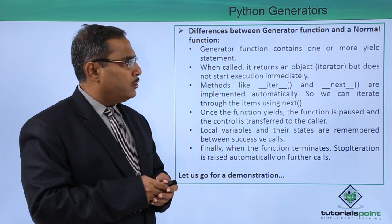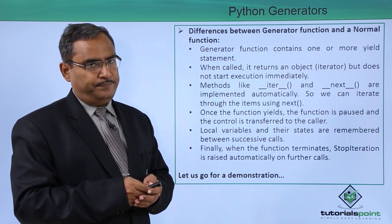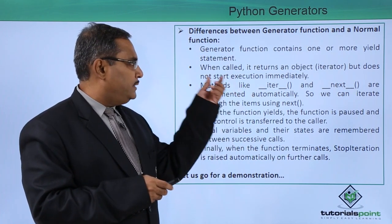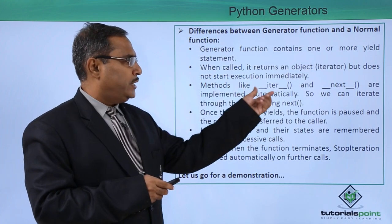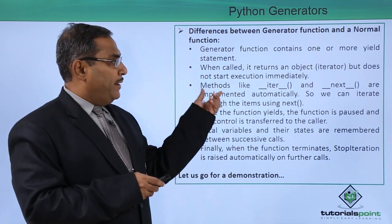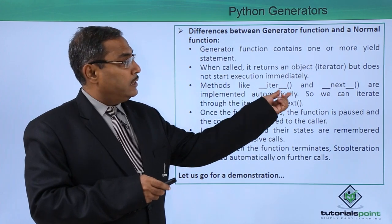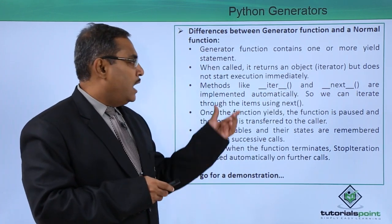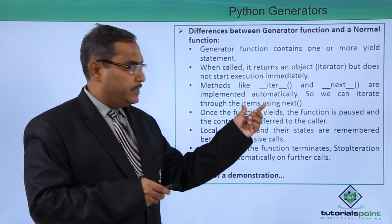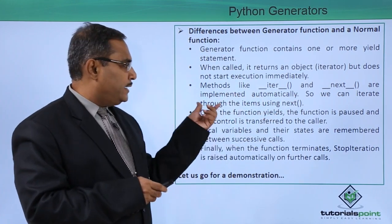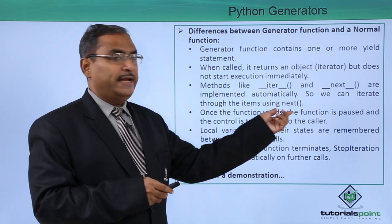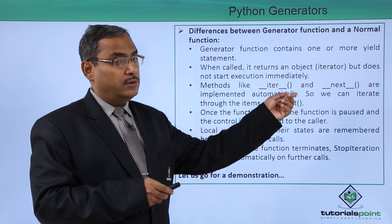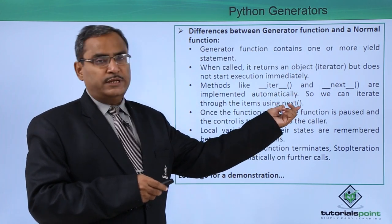A generator function contains one or more yield statements. When called, it returns an iterator object but does not start execution immediately. Methods like __iter__ and __next__ are implemented automatically in our generators, so we can iterate through items using next() directly.